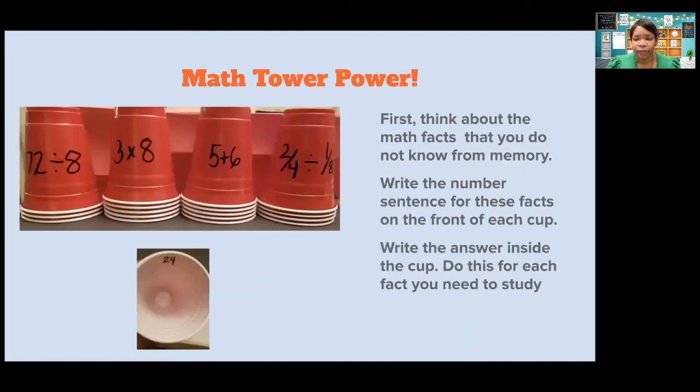Once you have those facts, the ones that you do not know from memory, you're going to write them on the cups. So just like you see here, 72 divided by 8, 3 times 8, 5 plus 6, 24 divided by 1/8. It can be addition, subtraction, multiplication, division, whatever you may be struggling with. You can go ahead and write those on those cups.